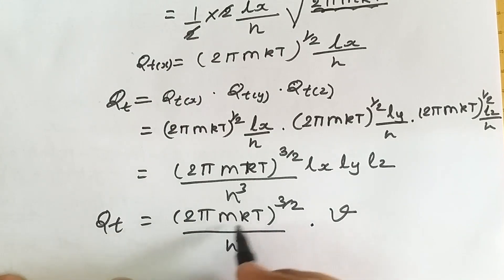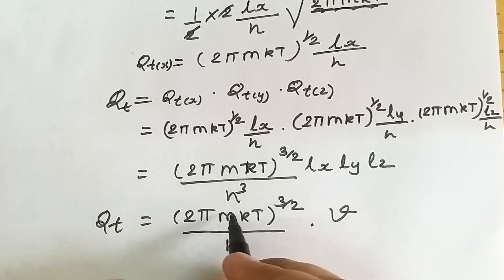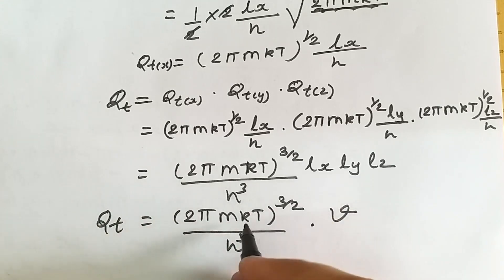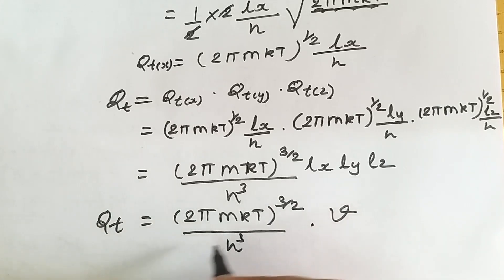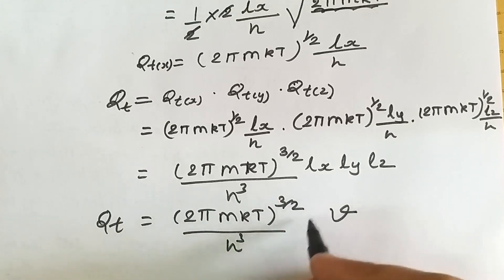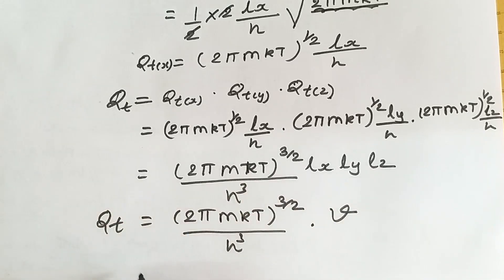If we know the temperature and molar mass of any compound or gas under consideration, we can easily find the translation partition function of that gas. Since k is Boltzmann's constant and h is Planck's constant, both are constants, and 2 pi is also constant. So for any system, if the molar mass, temperature, and volume are known, the translation partition function can be calculated very easily using this formula.